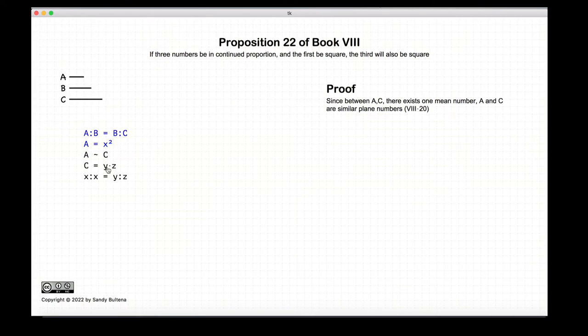So since we have three numbers, a, b, and c in continuous proportion, and b being the mean, then according to Proposition 20 of this book, a and c are both plane numbers, and they are similar.